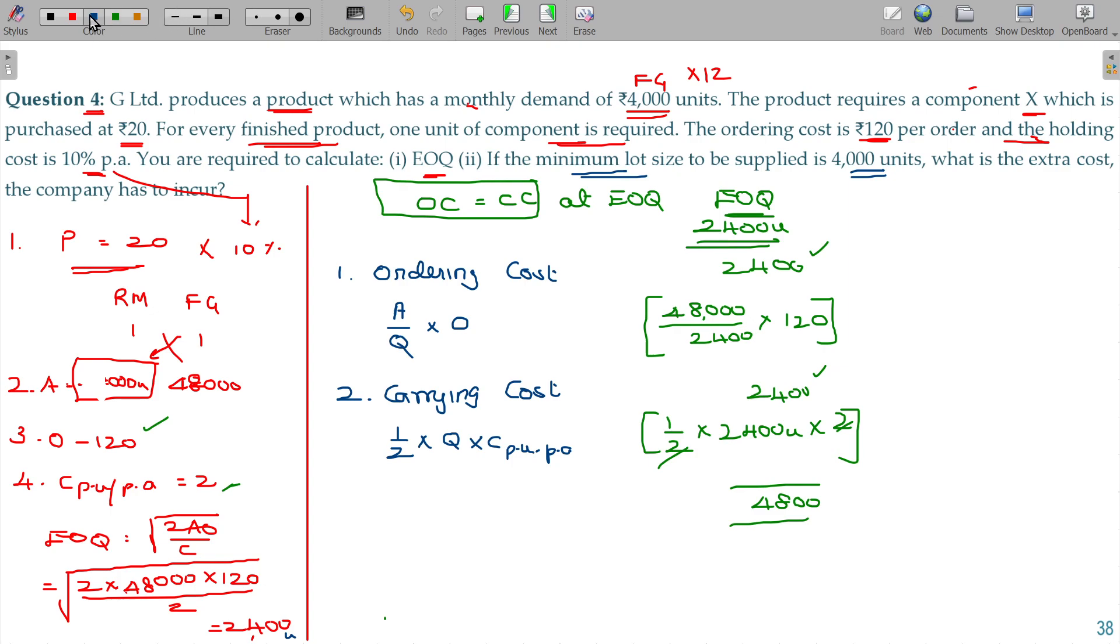But in the lot size case, the total cost other than material: we plan to go for 4000 units every time. Yearly requirement is 48000 units. 4000-4000 units. The total cost - ordering cost alone, and in case of carrying,